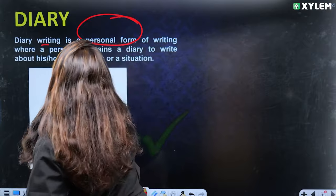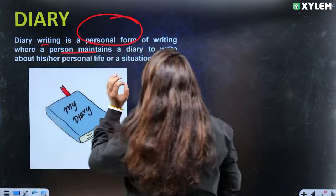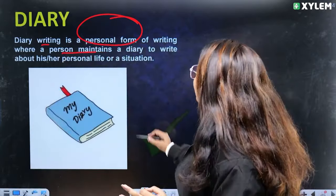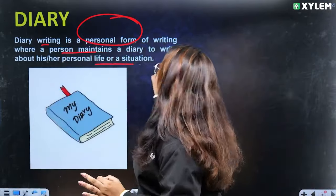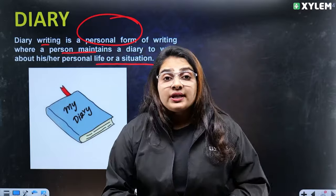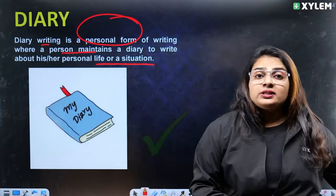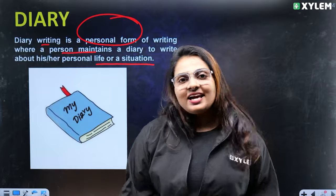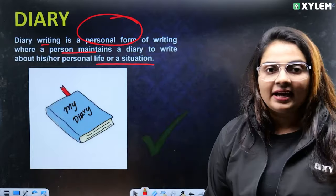A person writes in a diary to write about his personal life or situation. That's why we have a story, an event, and a story about diary writing.